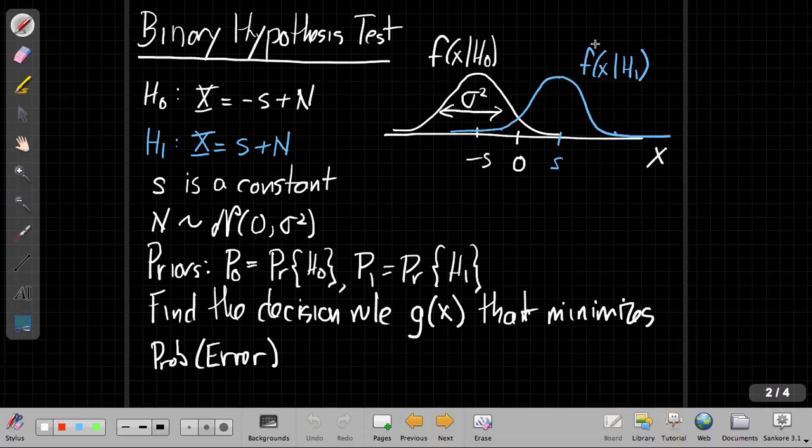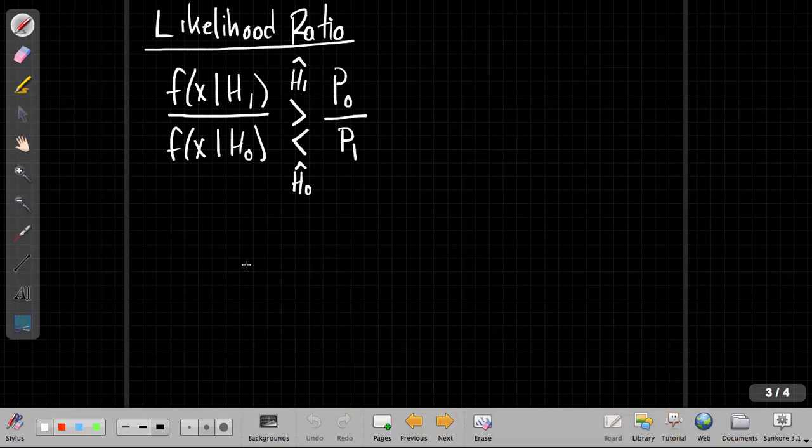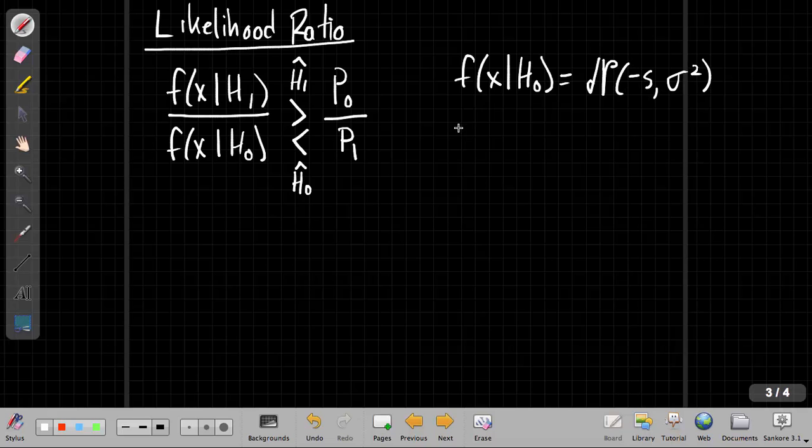Well, if I rewind to the previous page with this signal model, each of these are Gaussians with different means. So we know already from just looking at the previous page that under H0, things are distributed as a Gaussian with mean minus S and variance sigma squared. And under H1, it's also a normal distribution with mean positive S and variance sigma squared.